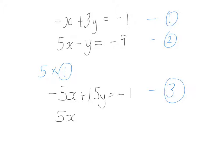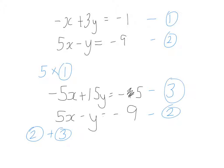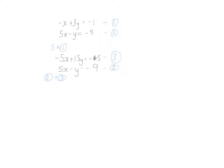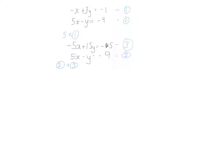Equation two stays the same. I need to remember to multiply everything in equation one by 5 — I initially forgot the constant, so minus 1 times 5 is minus 5. Now I add equations two and three. The x terms cancel: minus 5x plus 5x disappears. 15y plus minus y gives 14y. And minus 5 plus minus 9 is minus 14. Dividing both sides by 14 gives y equals minus 1.